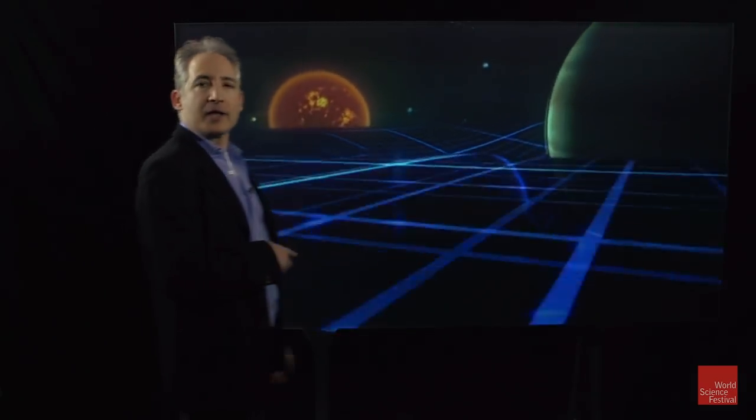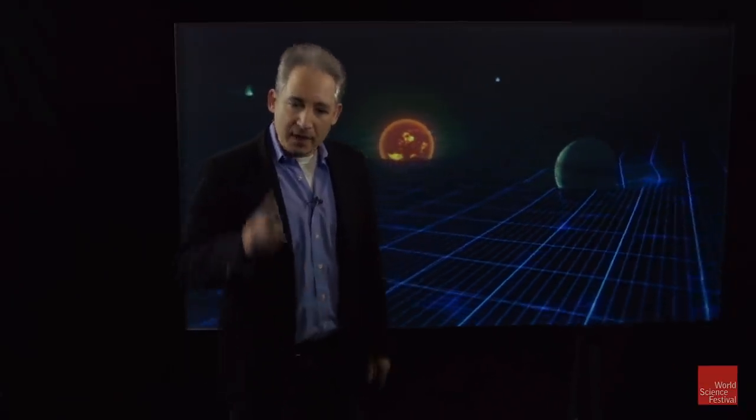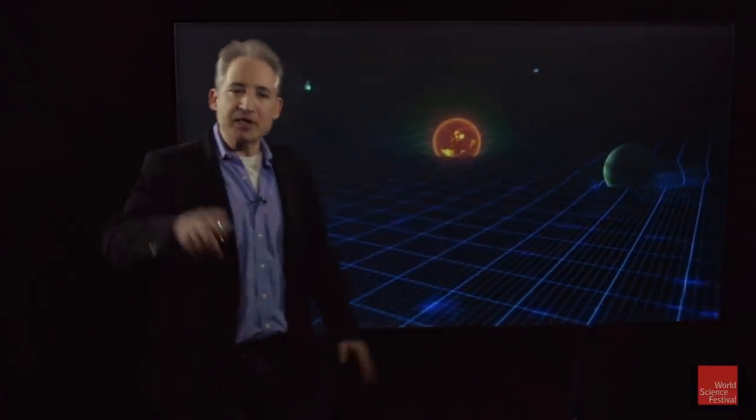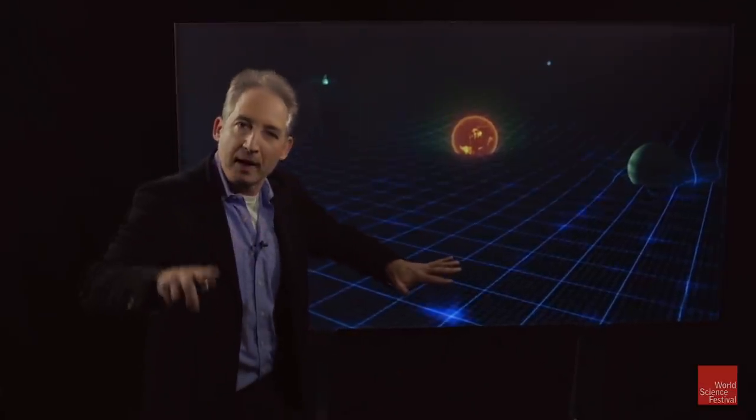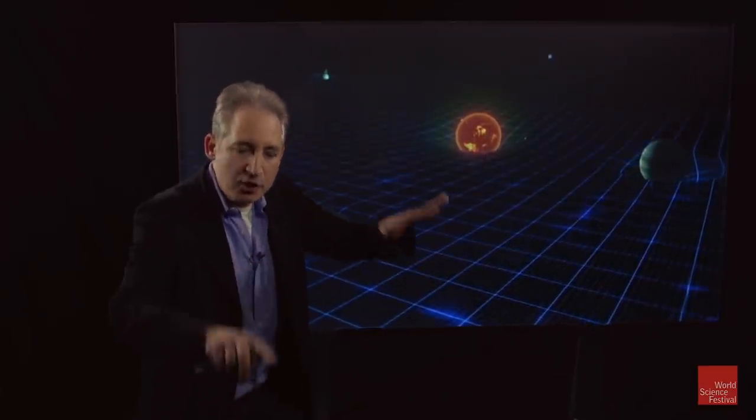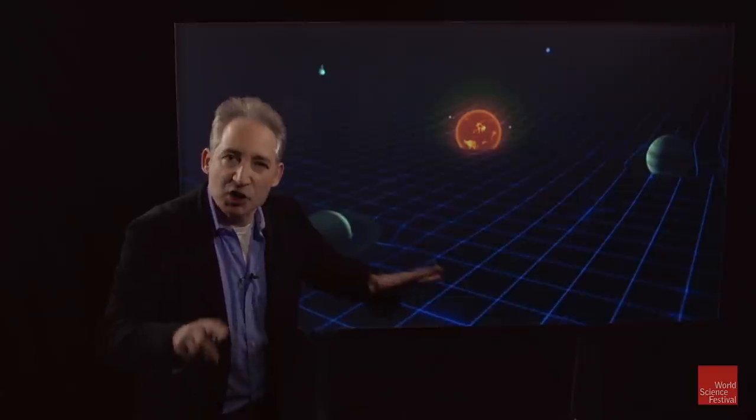Barely a year later, Einstein pushed this idea one vital step further. He realized that if space is flexible enough to warp, then it should also be able to ripple, to vibrate, to undulate.